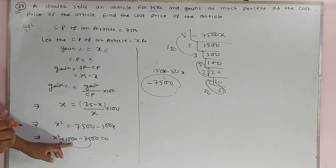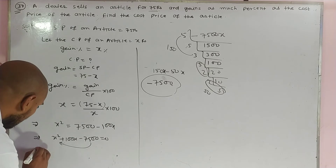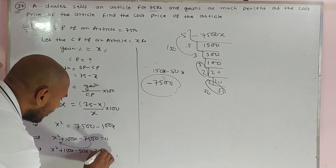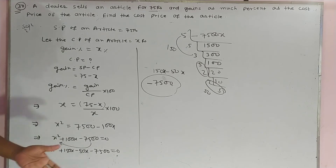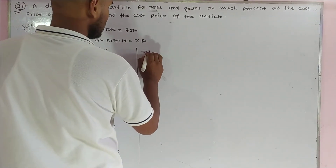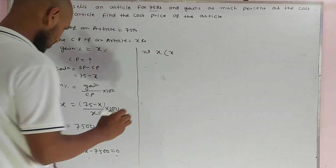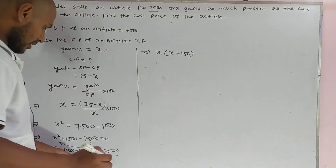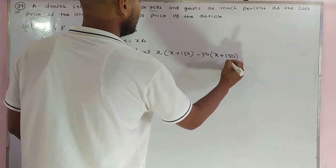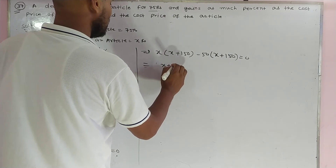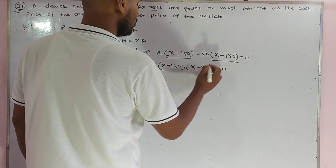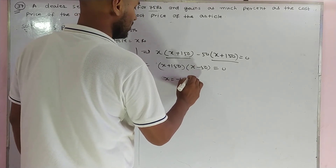So we replace 100x by 150x minus 50x, giving us: x squared plus 150x minus 50x minus 7500 equals 0. Taking x as common from the first two terms and minus 50 as common from the last two terms, we get x(x plus 150) minus 50(x plus 150) equals 0. So (x plus 150)(x minus 50) equals 0, giving x equals minus 150 or x equals 50.